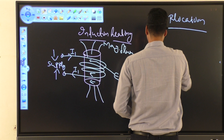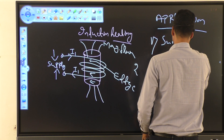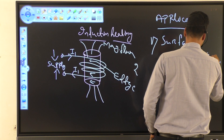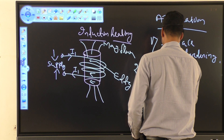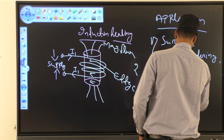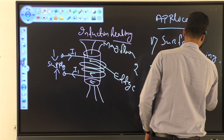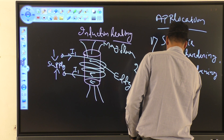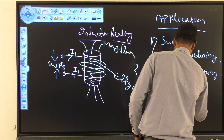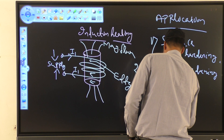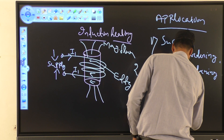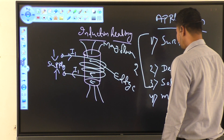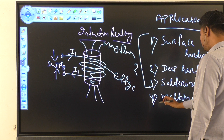Induction heating is used for surface hardening, deep hardening, soldering, and melting. Surface hardening, deep hardening, and soldering are done at high frequency. At low frequency, we do the melting process.